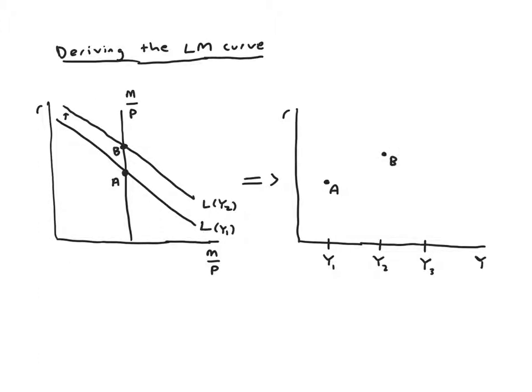And then we could repeat and say okay well now income is going to increase again to y3. So what would the new money demand curve look like and it would be shifted up again just a little bit extra.